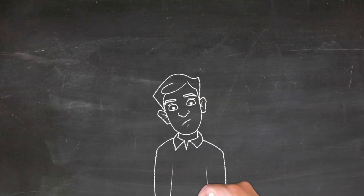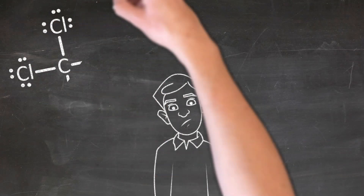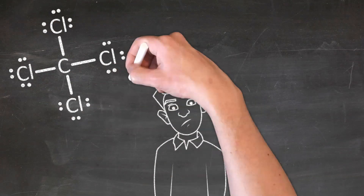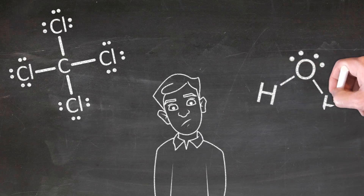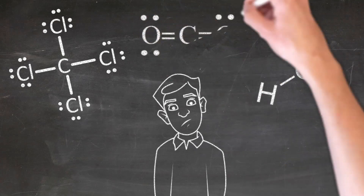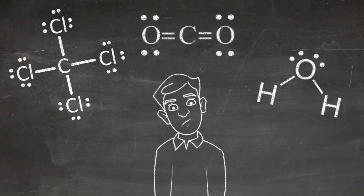If you are struggling with drawing Lewis structures, or are confused on when to add double bonds or triple bonds, or even when to add lone pair electrons, then this video is for you. Make sure you stick around until the very end, because after we tell you the four easy steps to drawing Lewis structures, we're then going to take you through some examples.